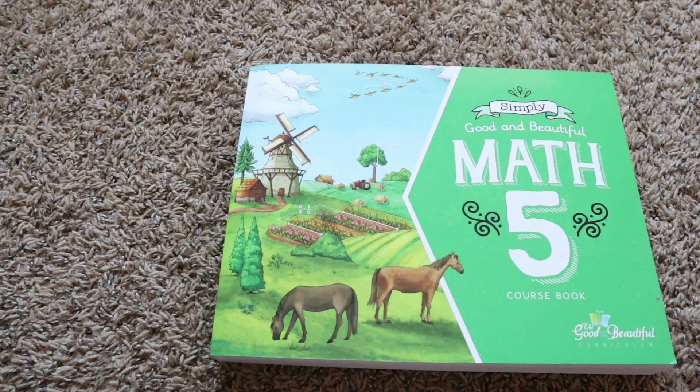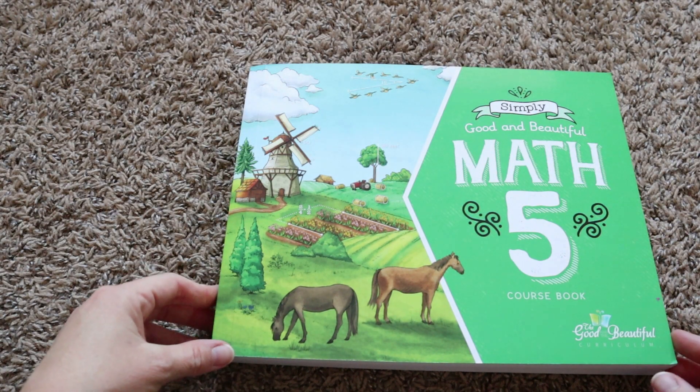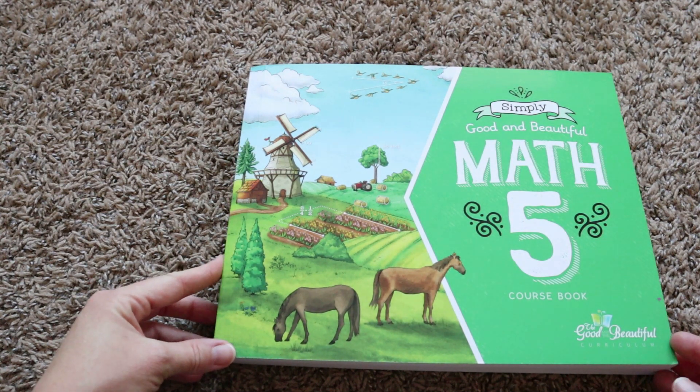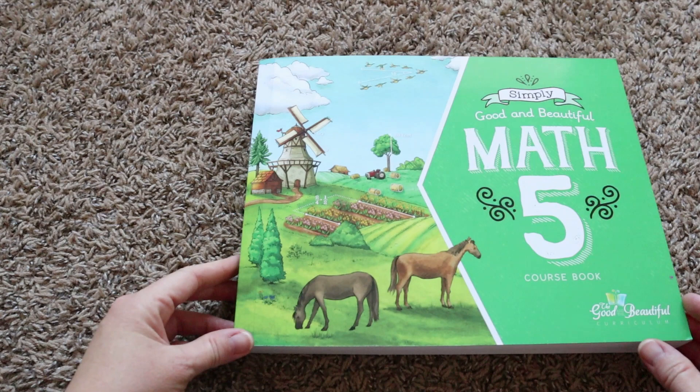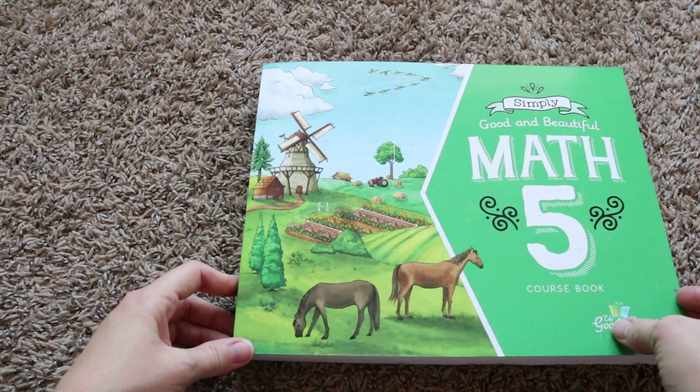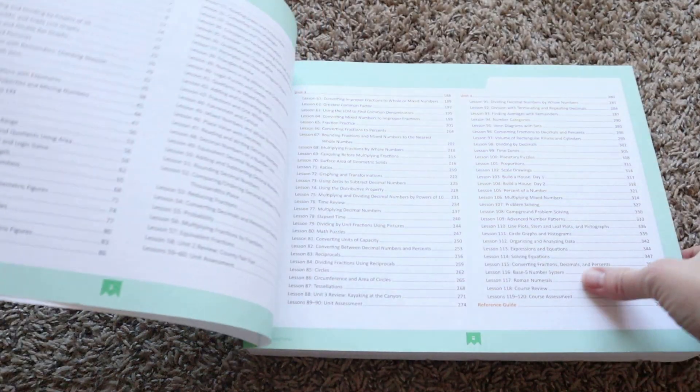All right, you guys. As always, the planes seem to start up whenever I'm going to record a video so just try to ignore the background. I'm sorry. It shouldn't be too distracting though. They're usually not too bad. So this is the Good and the Beautiful Math Level 5.